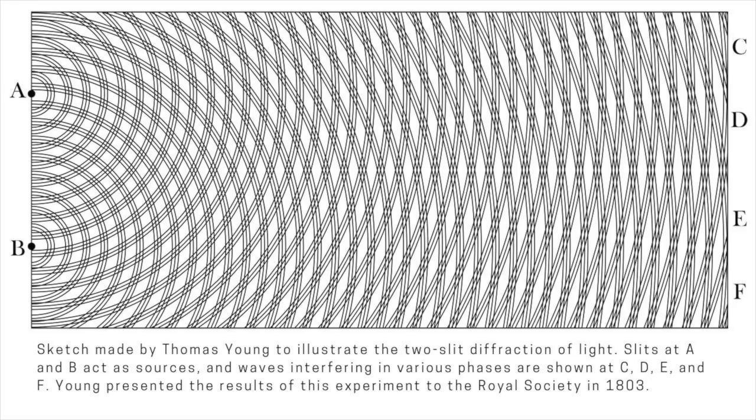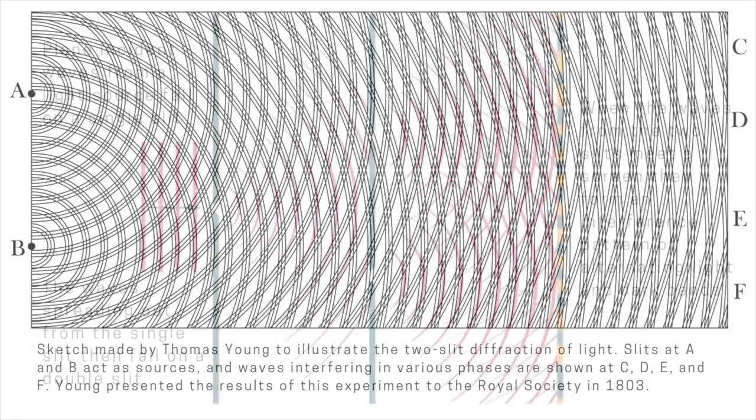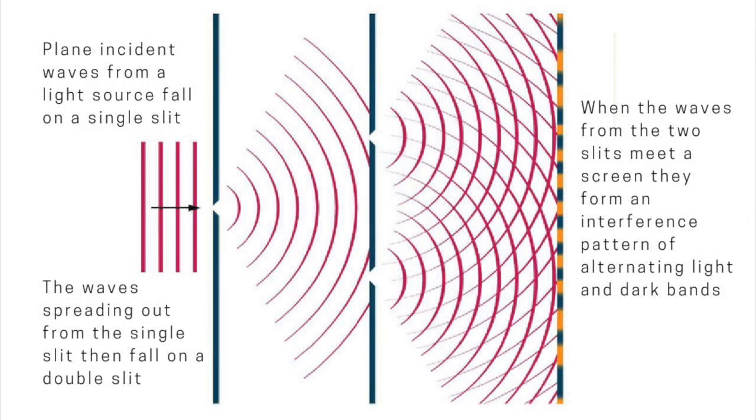And the stripes on the screen speak unarguably of the adding and cancelling out of wave crests and troughs. What happens now if we dim the light source? A 60-watt light bulb puts out roughly 150 million trillion photons a second. This vast number underscores why quantum effects, which expose the discreteness of energy, go unnoticed at the everyday level.